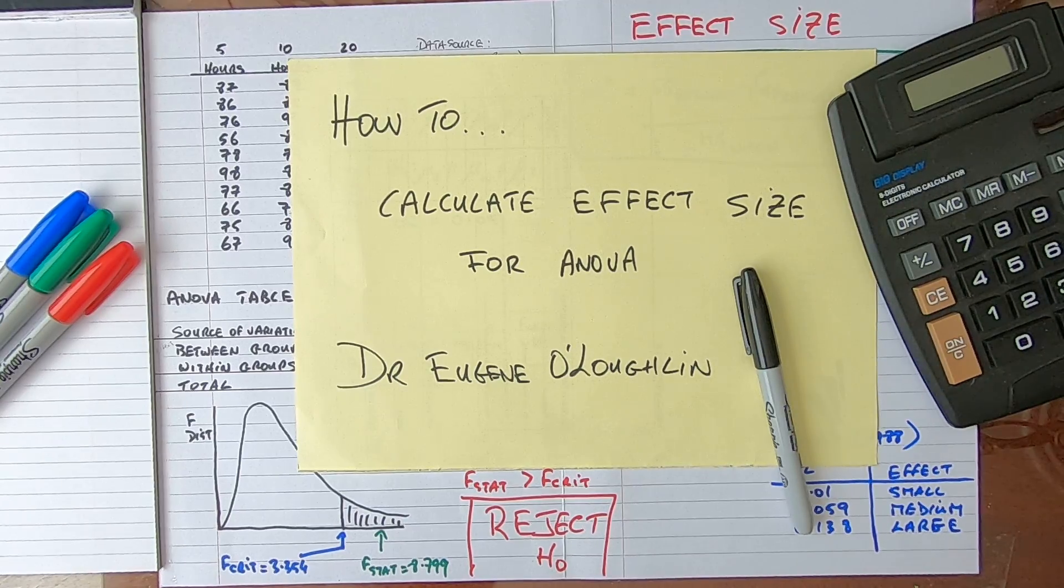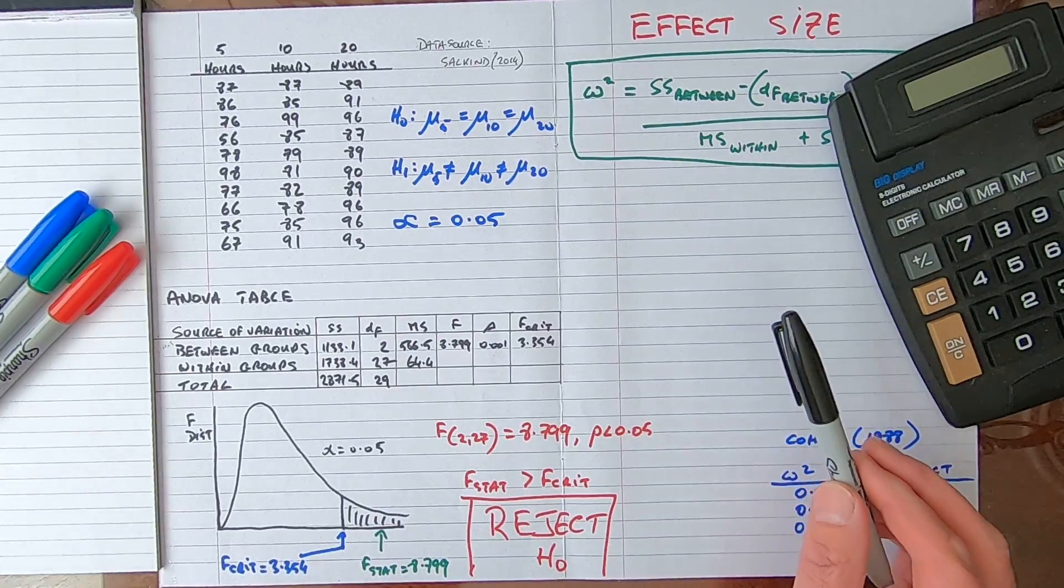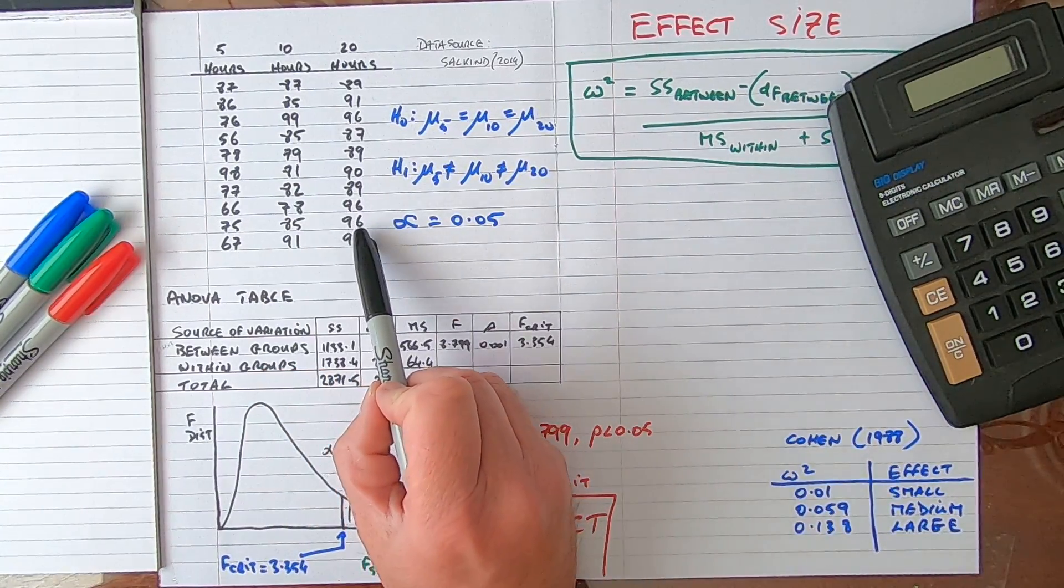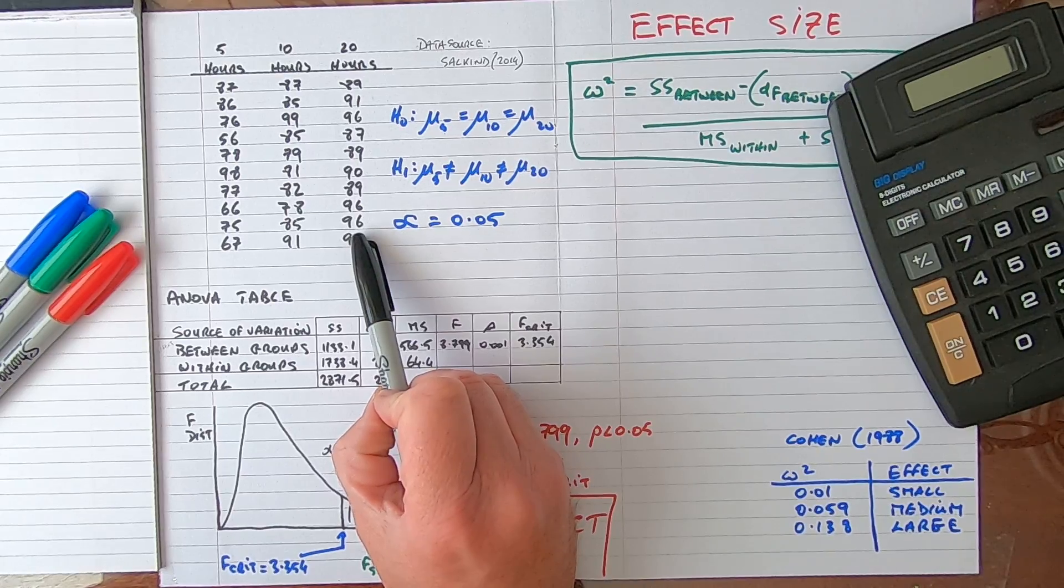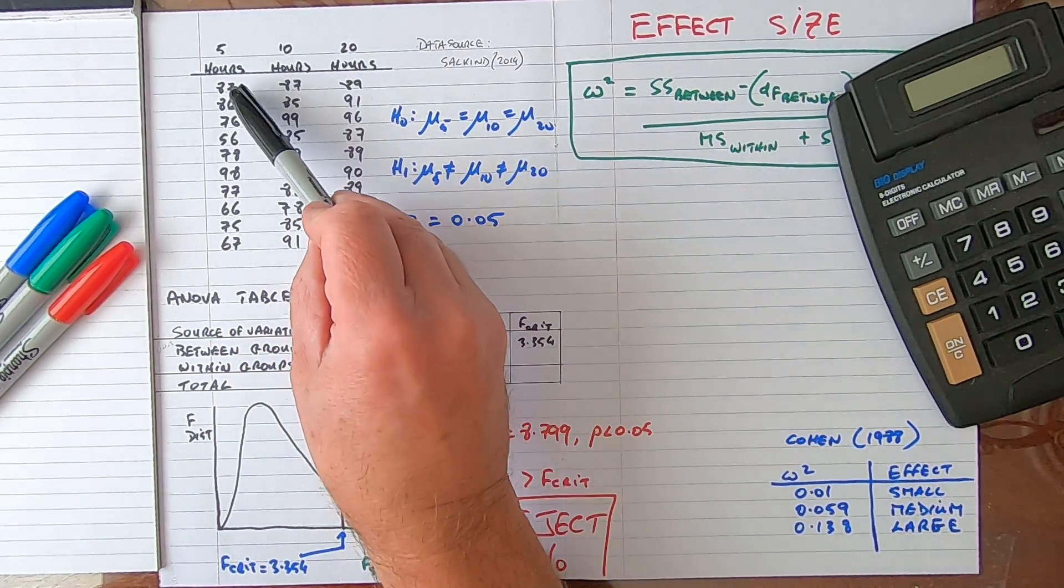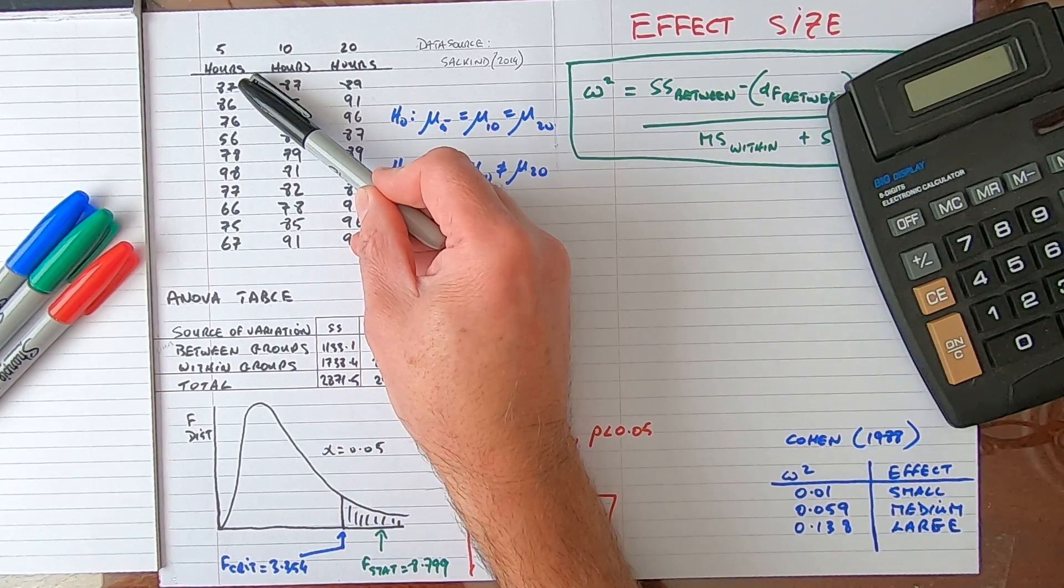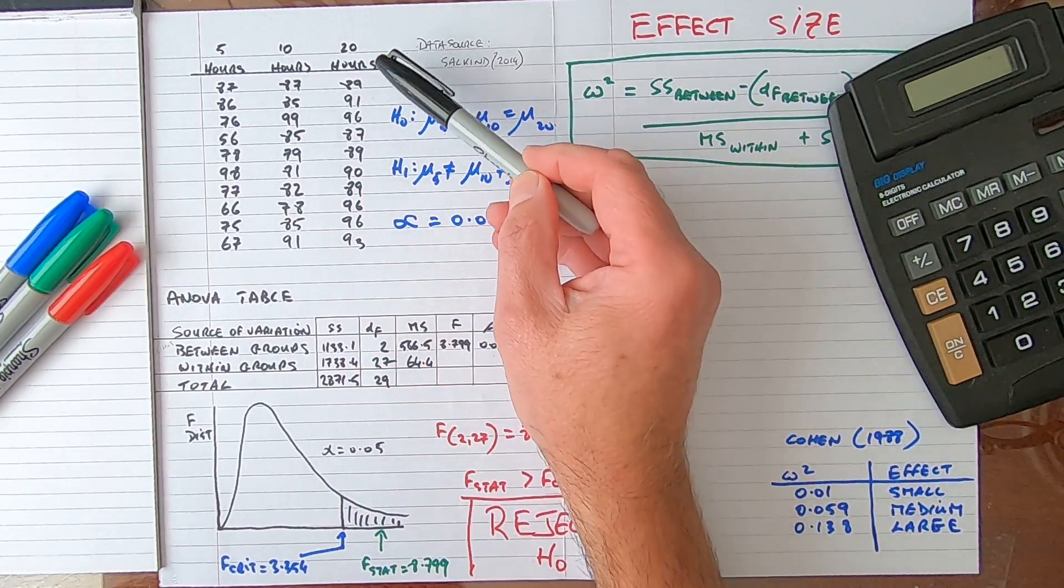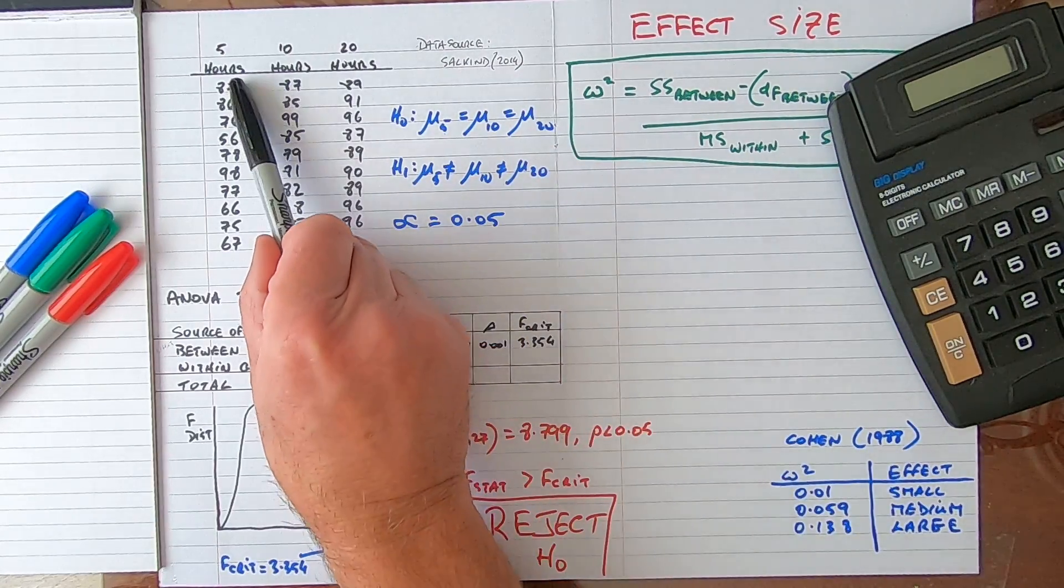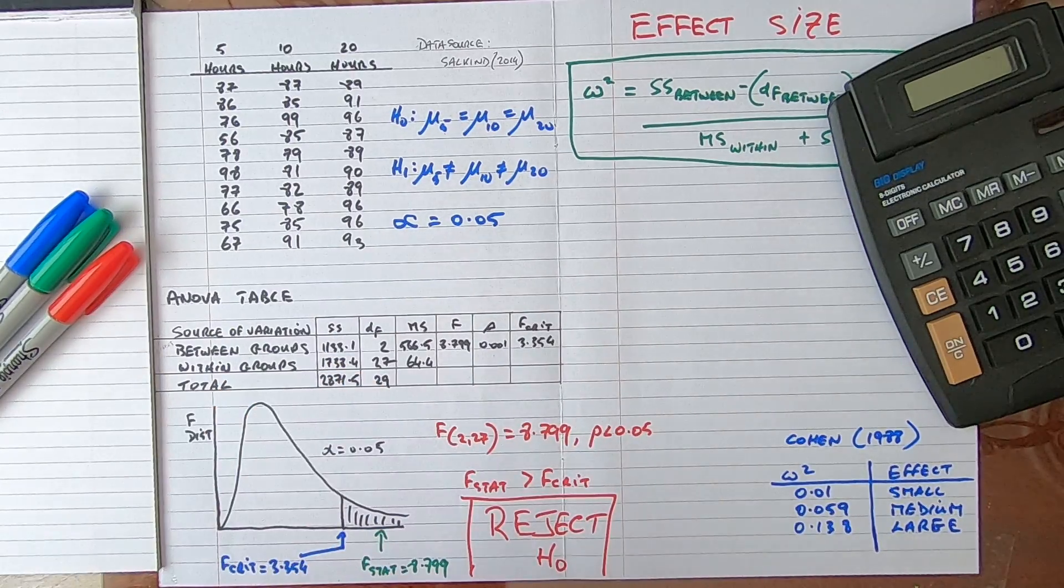Before we start, let's take a look at an actual ANOVA test. In this particular test I've got three groups of young children who have been given different numbers of hours of language training, and these are their language scores. The first group have had five hours of class, the second group have had 10 hours of class, and the third group have had 20 hours of class. We want to see if the number of hours has an effect on the students' test scores.